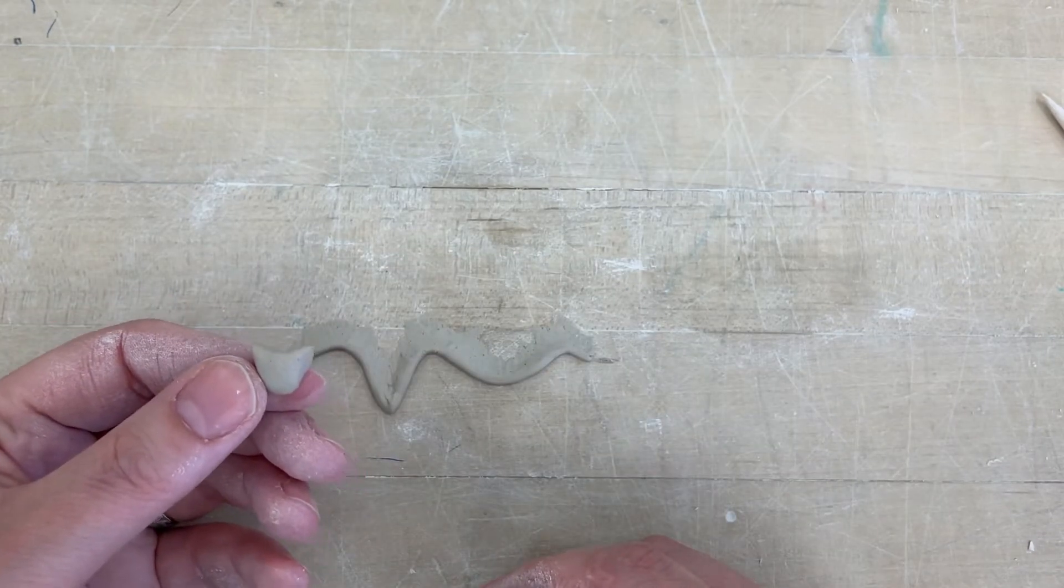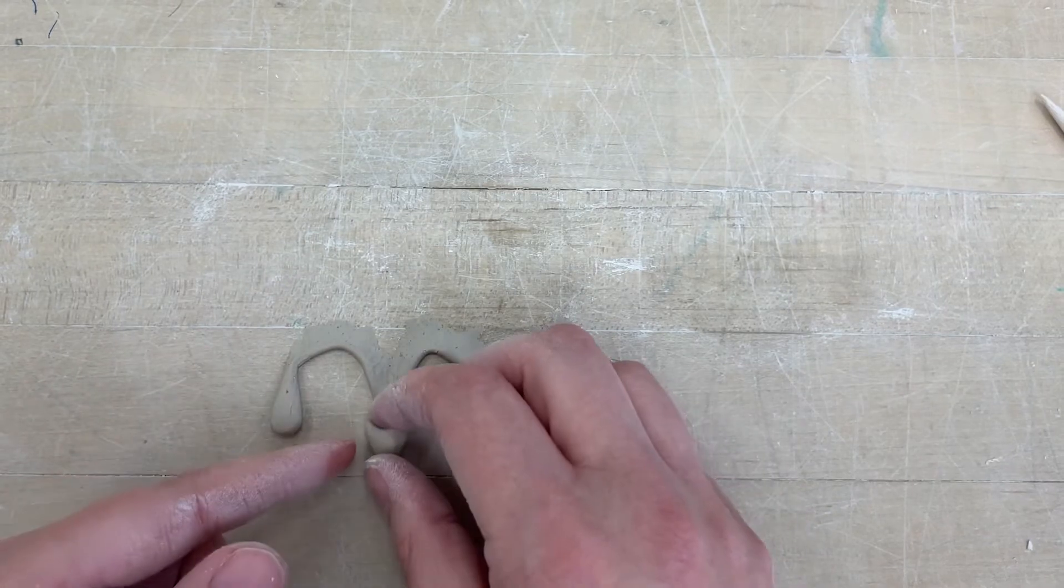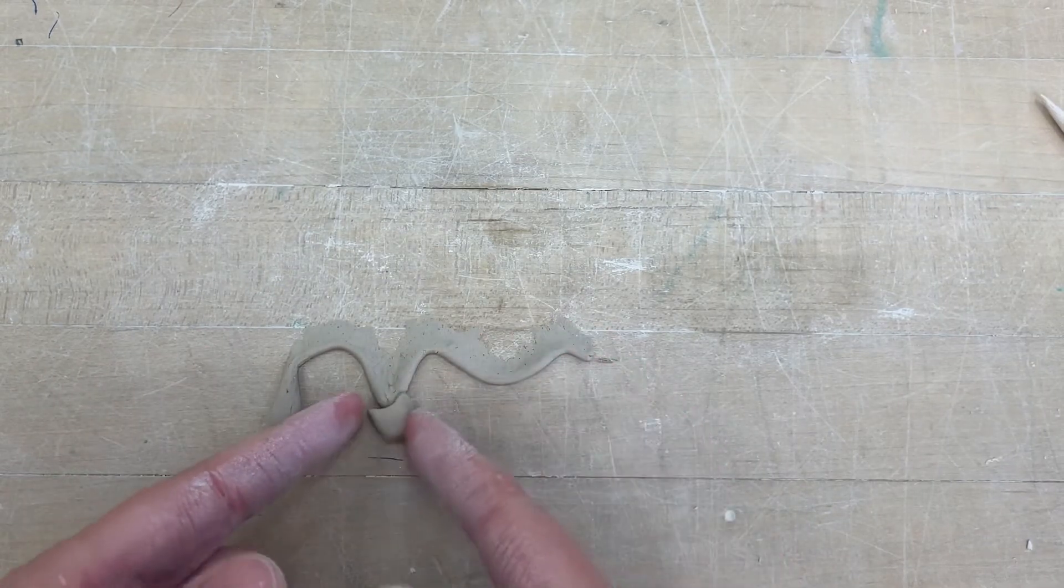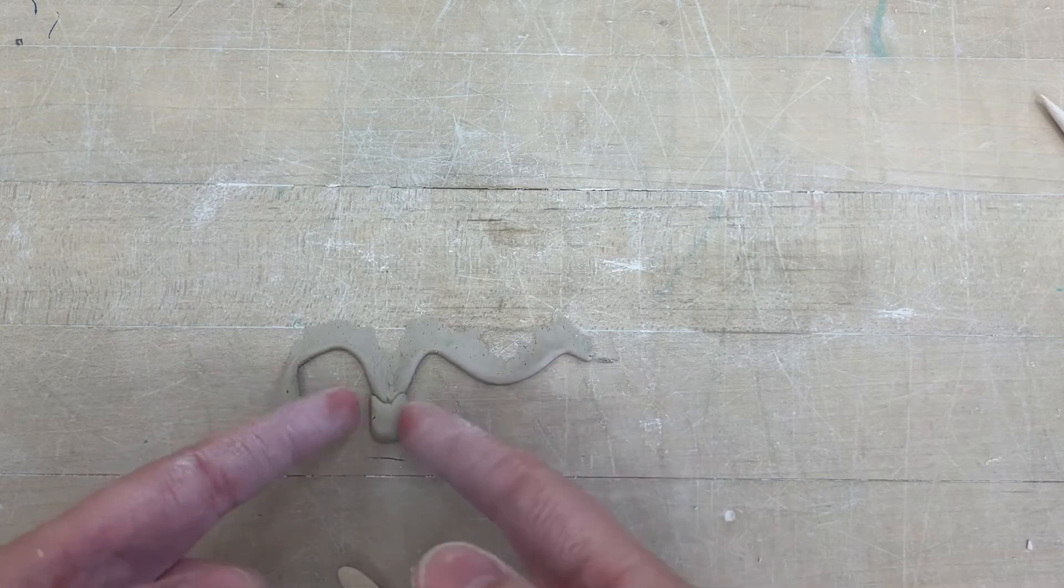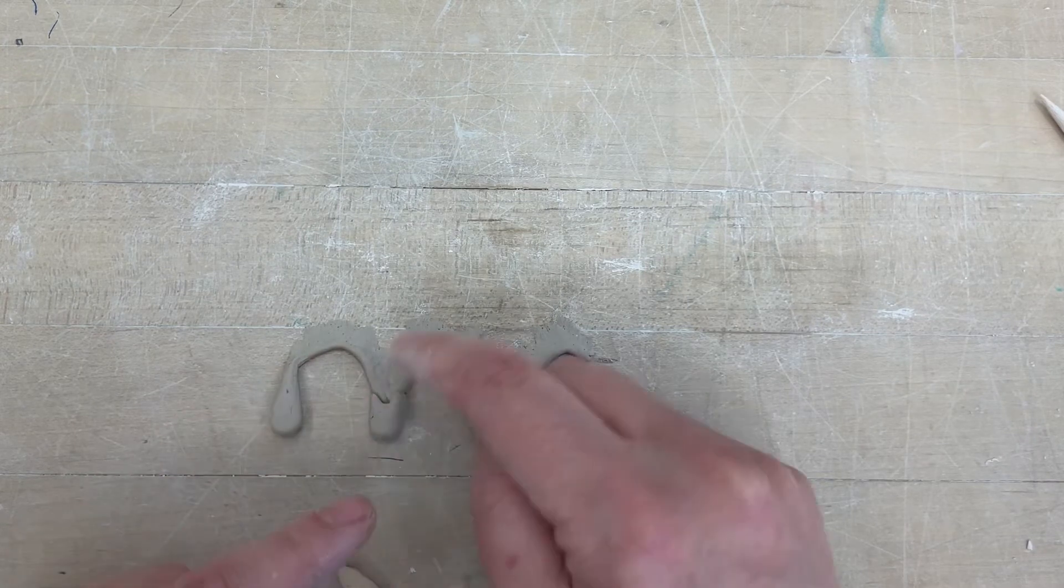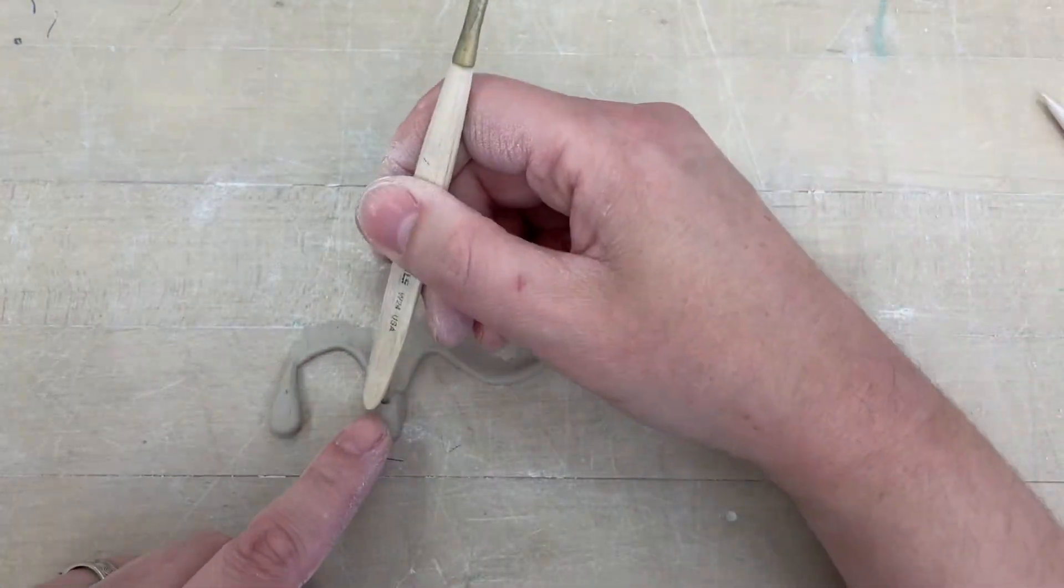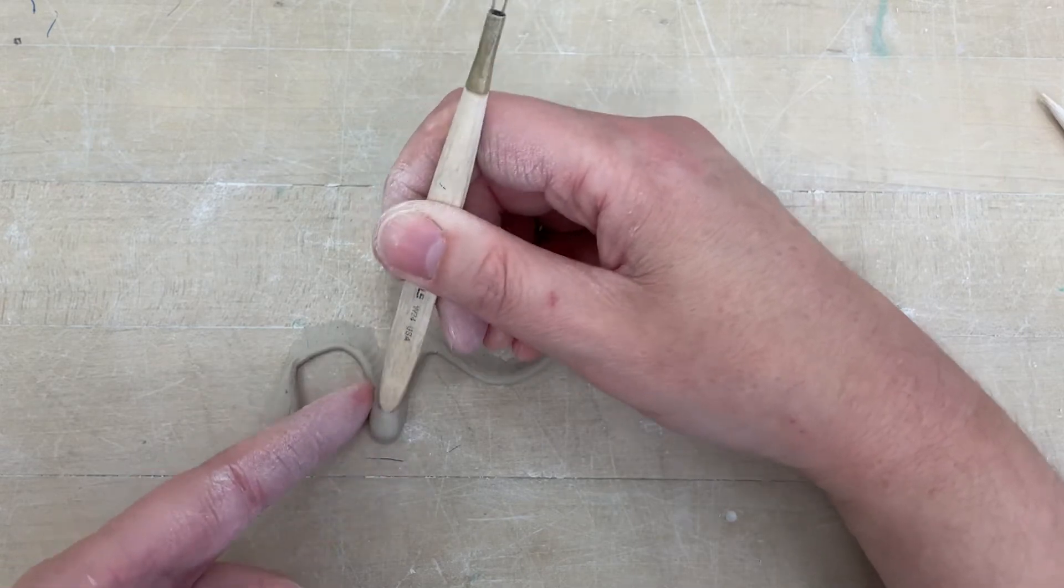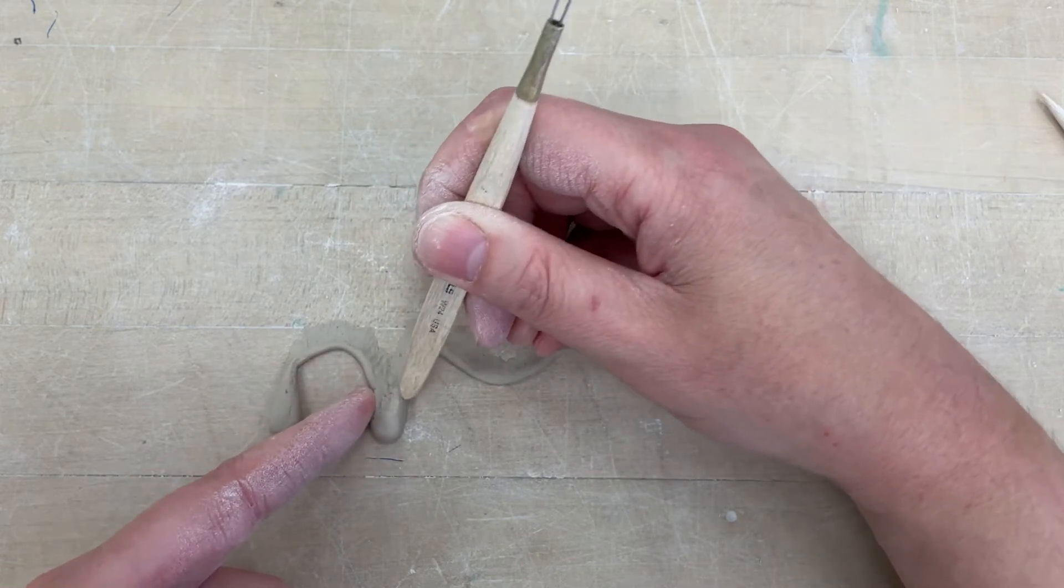And then I'm going to still have the edges kind of round. So, okay, now it looks like a cat. Okay, so I'm going to take my little cat. I would slip and score it on there and then I'm going to make it match what is above it.